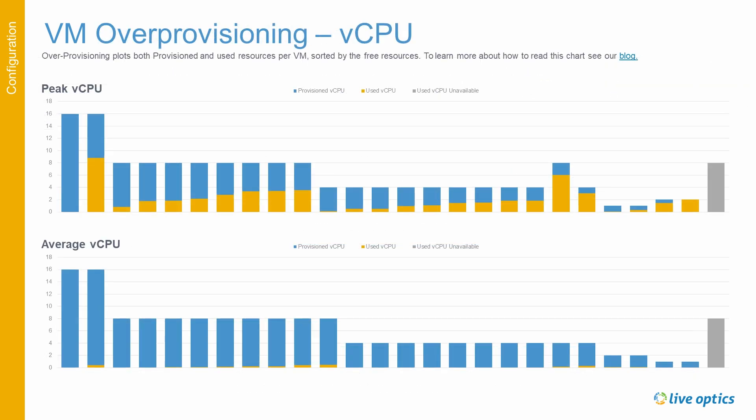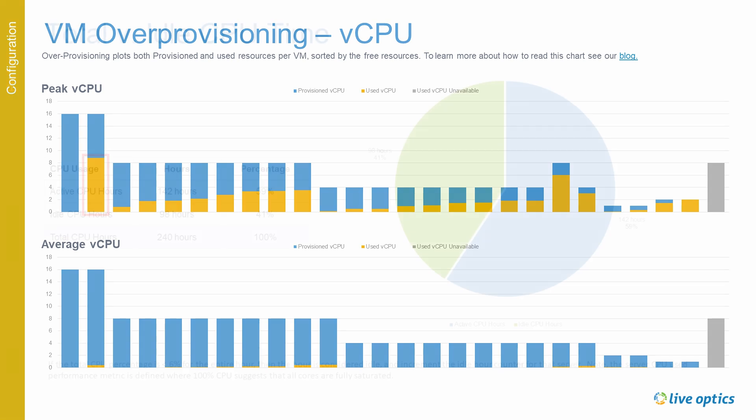This is a graph on over-provisioning for vCPU. There are graphs for memory and capacity as well. Each bar in the graph represents a virtual machine. The blue bar represents how many vCPUs have been provisioned for that virtual machine, and the brown bar indicates how much of the provisioned resource has been utilized at peak.